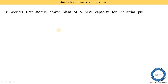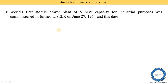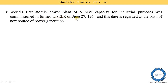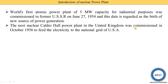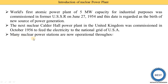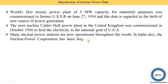The world's first atomic power plant, of 5 megawatt capacity for industrial purposes, was commissioned in the former USSR on June 27, 1954. This date is regarded as the birth of a new source of power generation. The next nuclear power plant, Calder Hall in the United Kingdom, was commissioned in October 1956 to feed electricity to the national grid. Many nuclear power stations are now operational throughout the world.